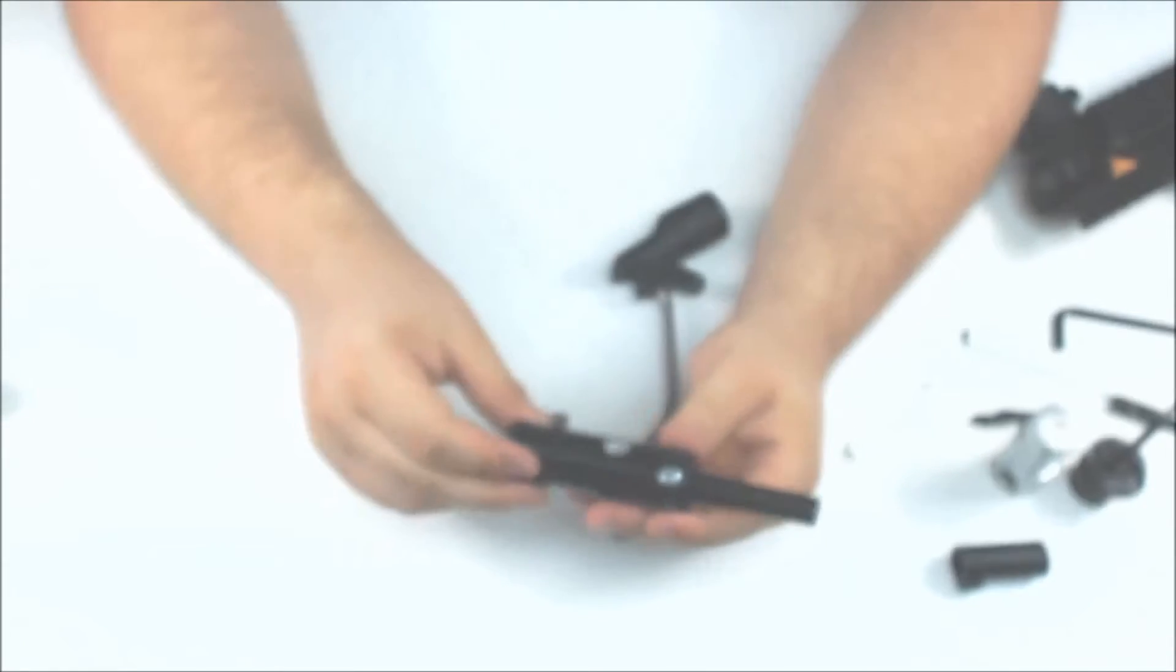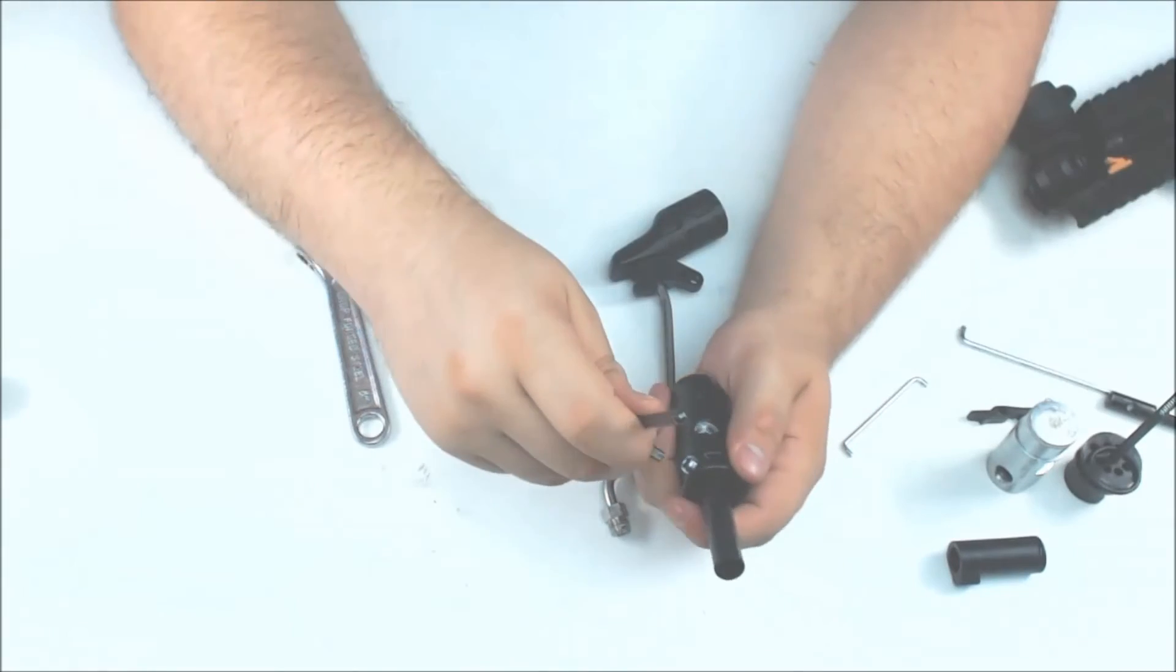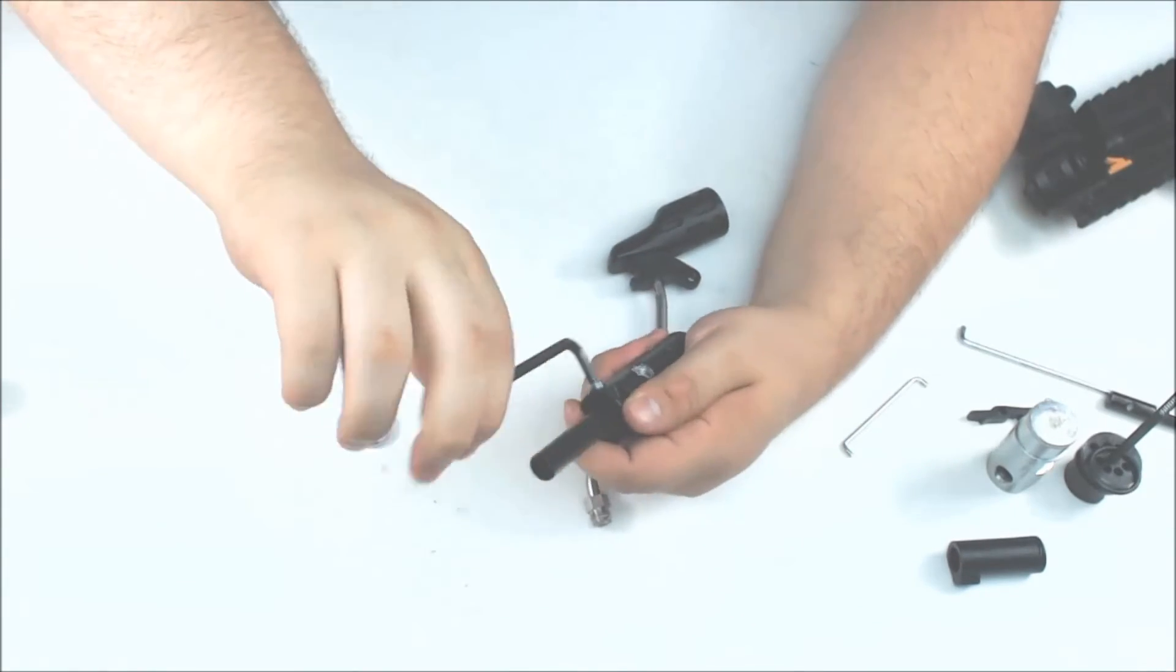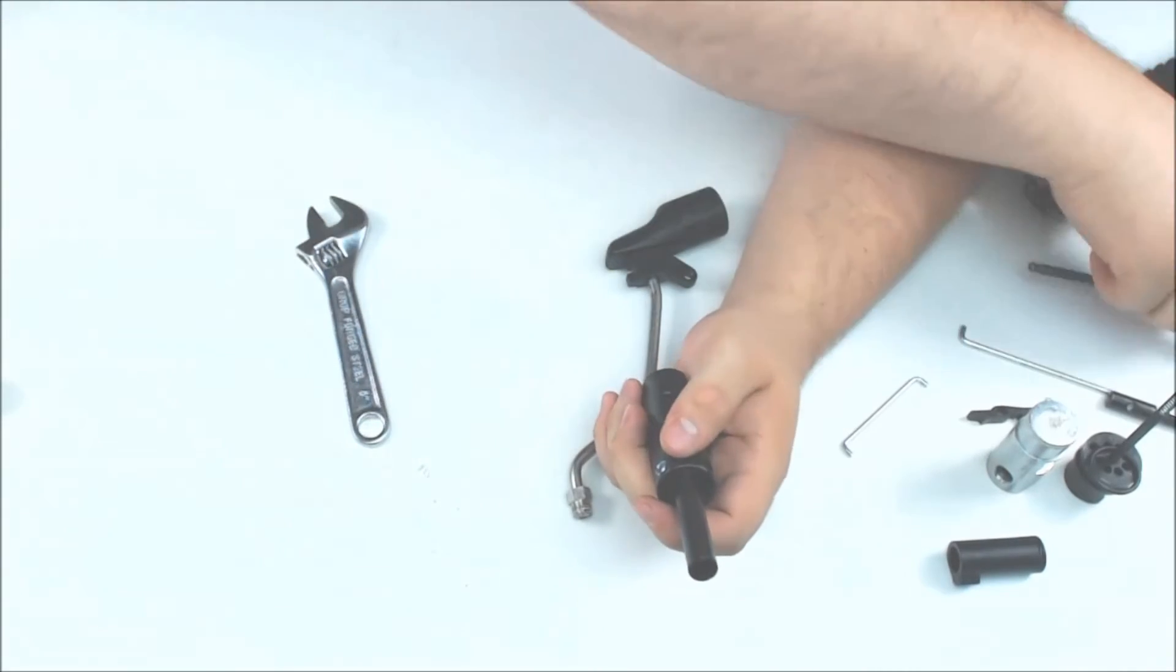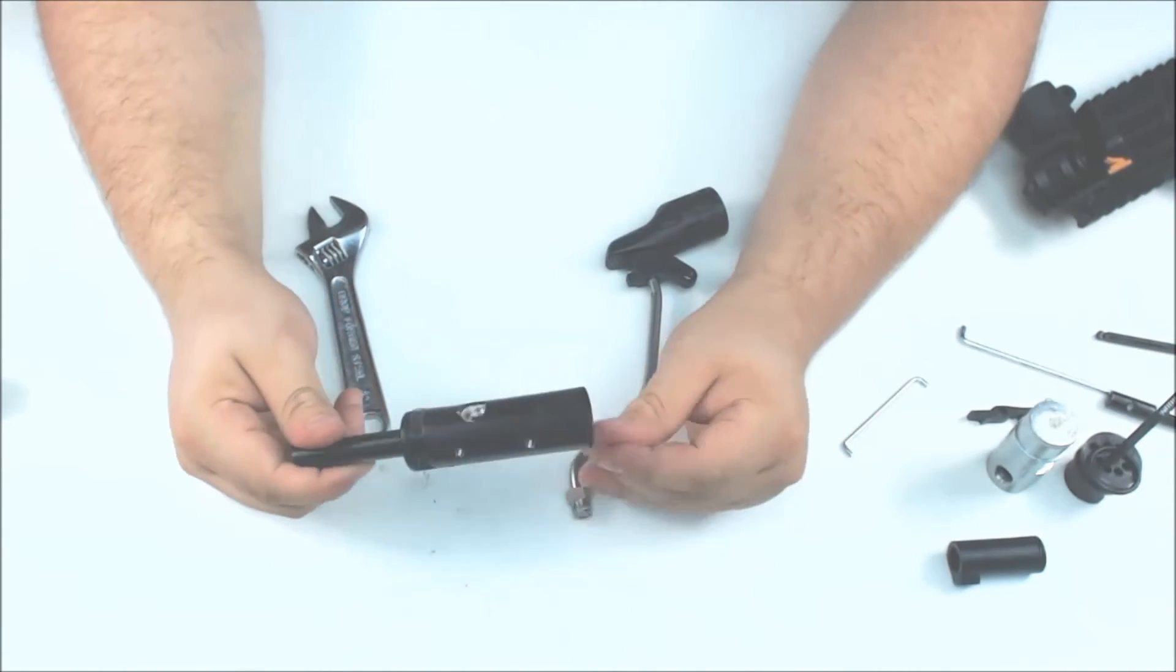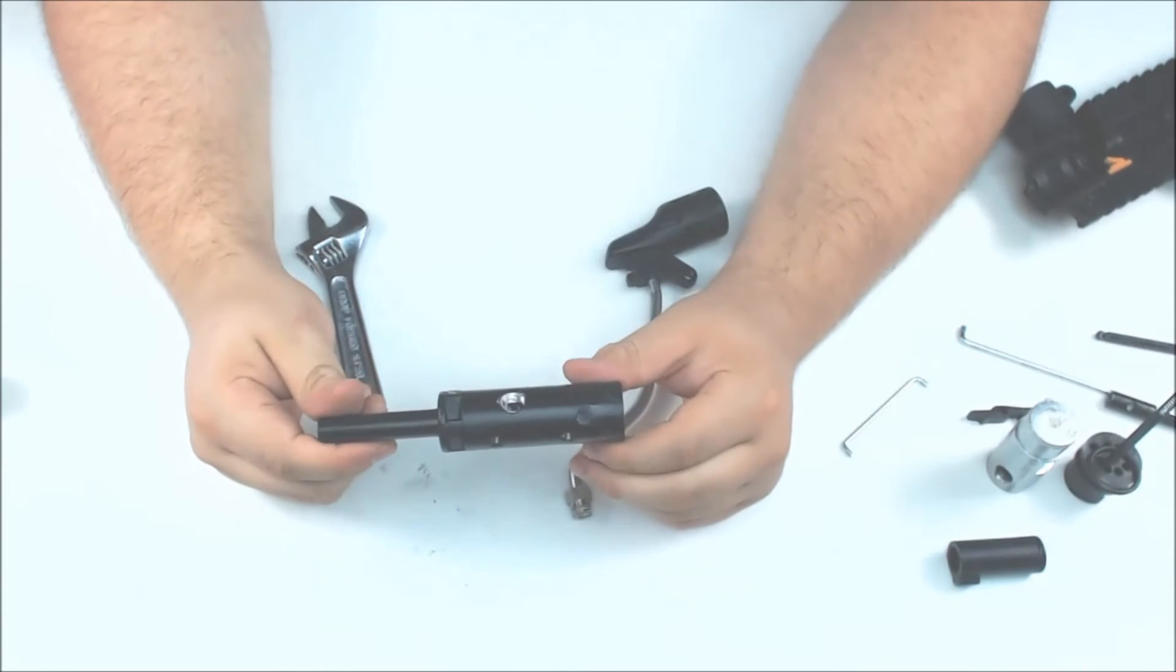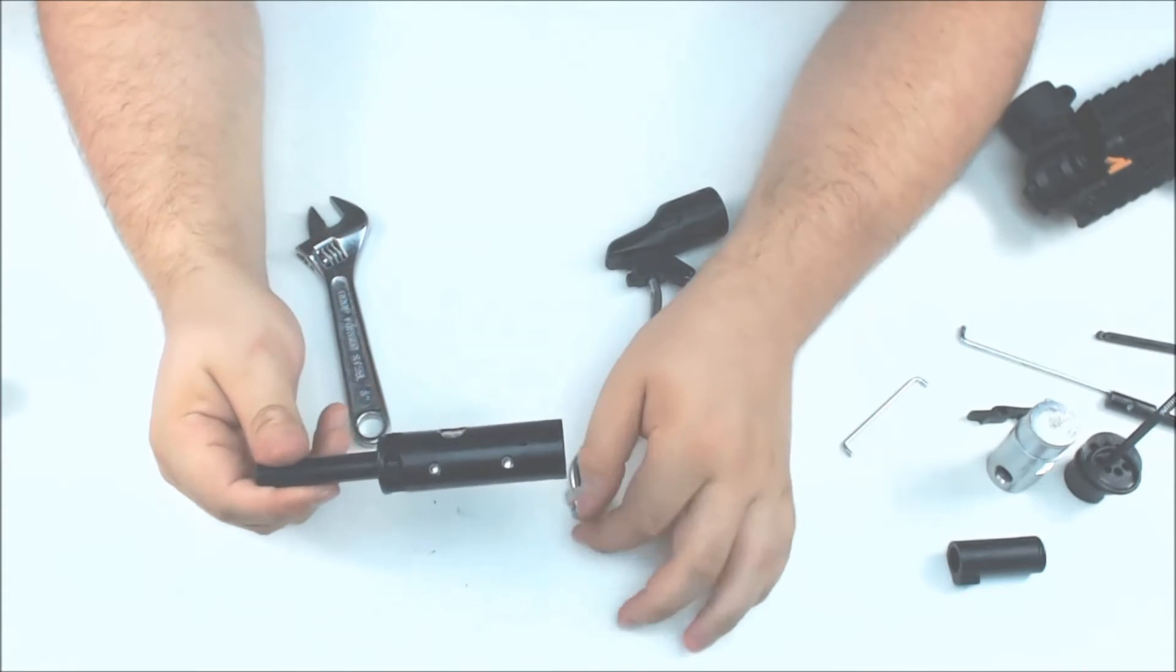All right. And so now we have the valve in the power tube. I'm going to go ahead and screw this back in a little bit, the velocity adjuster. All right. So now we have our new power tube with our valve ready to be put back on.